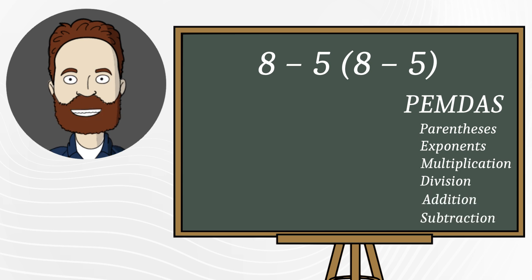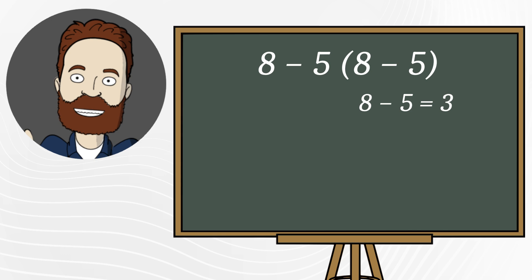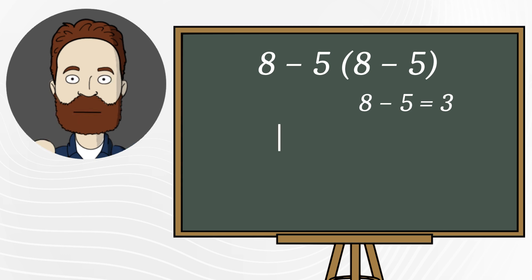So, let's solve it correctly. Step 1, the parentheses. 8 minus 5 equals 3. Now, substitute back, and we have 8 minus 5 times 3.